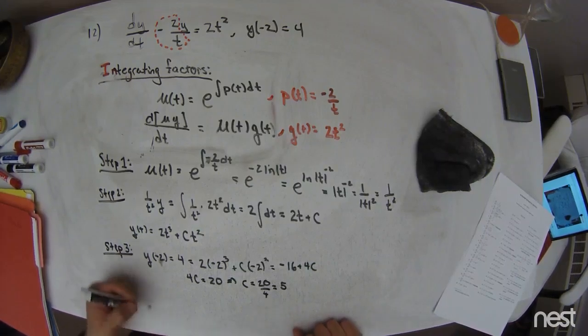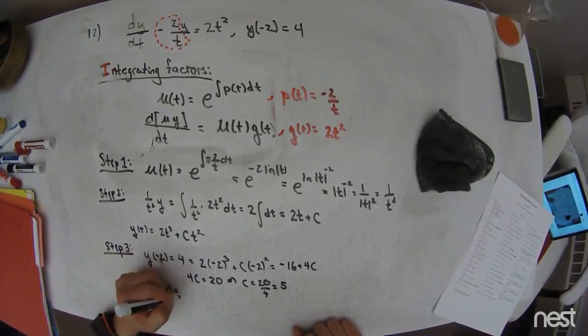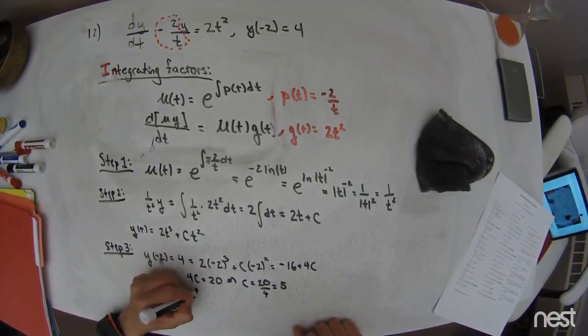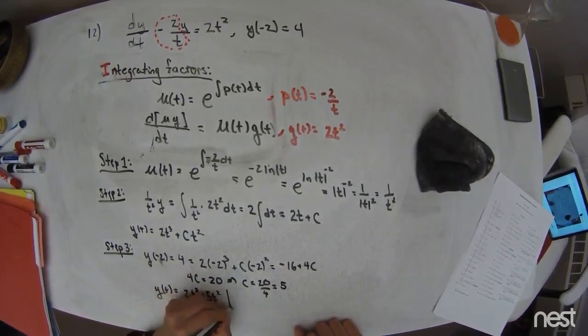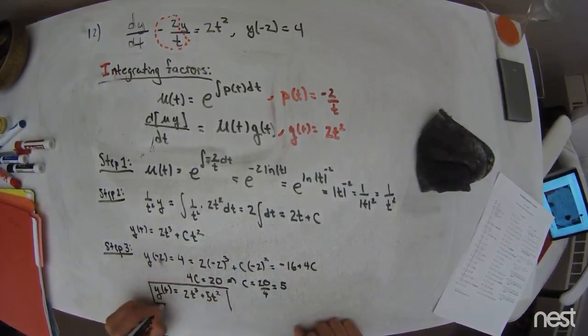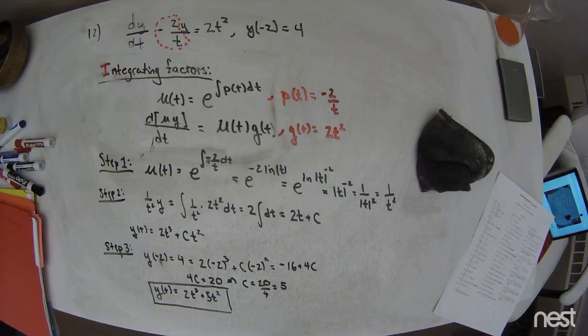Yeah, yeah, good. Okay. So y of t is equal to 2t cubed plus 5t squared. That's a heck of a way to talk about a cubic polynomial. Okay. There we go, okay.